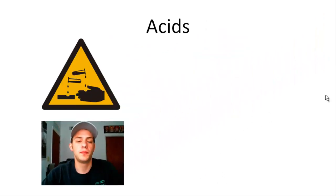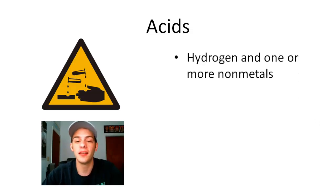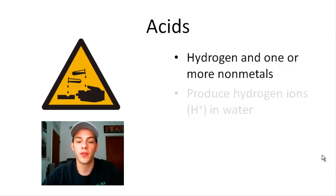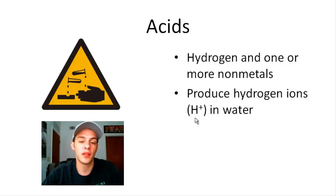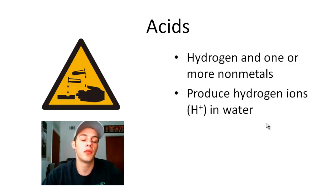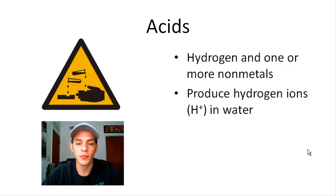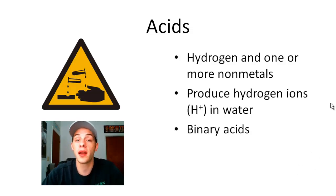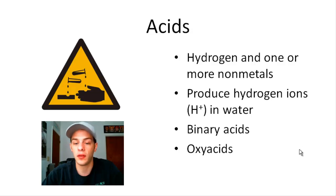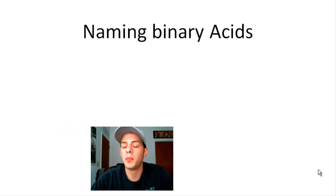Now let's talk about acids. An acid is hydrogen combined with one or more nonmetals. One of the most important characteristics of acids is that they produce hydrogen ions — H+ ions — in water. The acids we'll learn to name are binary acids, composed of hydrogen and one other nonmetal, and oxy acids, which are composed of hydrogen and a polyatomic ion containing oxygen.